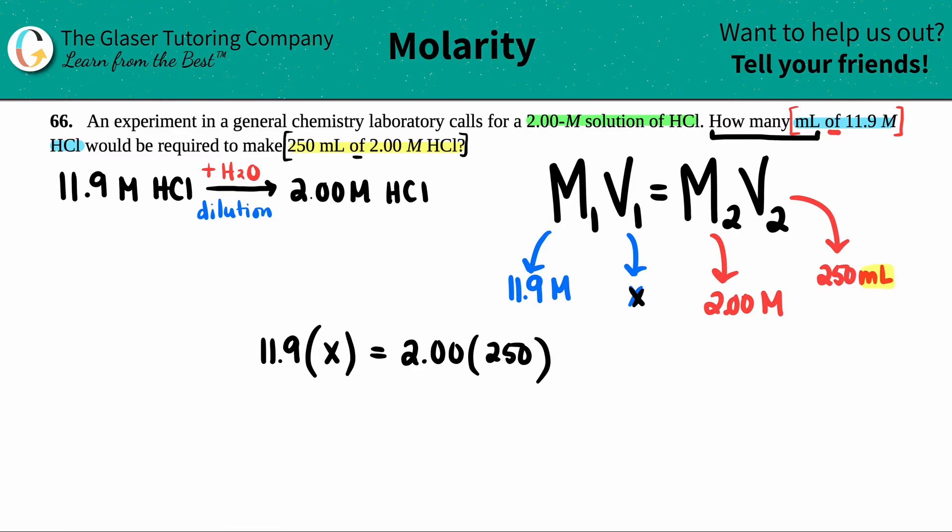Now let's get back to what we're trying to solve for. We're trying to solve for X. So we're dividing by 11.9 and we divide it by 11.9 and we cancel that out. So let's just do the math. X equals, let's see, 2 times 250 divided by 11.9. Let's see, if I had to say how many sig figs we need, we need a total of two sig figs because this answer has two sig figs in it and that's the lowest number of sig figs in the problem. So my answer should only have two sig figs. So we have 42 milliliters.